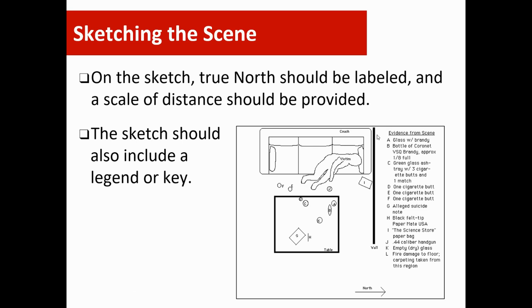On the sketch, true north should be labeled, which I referred to as directionality, and a scale of distance should be provided. When applicable, the sketch should include a legend or key. In this sketch we have a victim, a couch, and evidence that is lettered. We need to know what those letters mean, so there's a legend telling us D is a cigarette butt, A is a glass with brandy, H is a black felt tip Paper Mate pen.